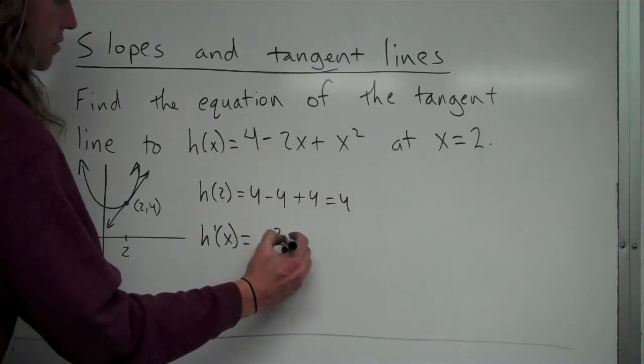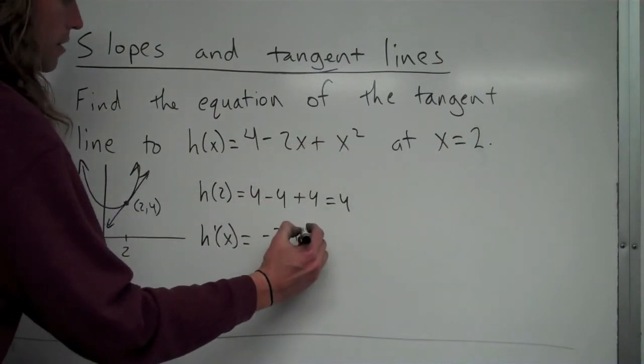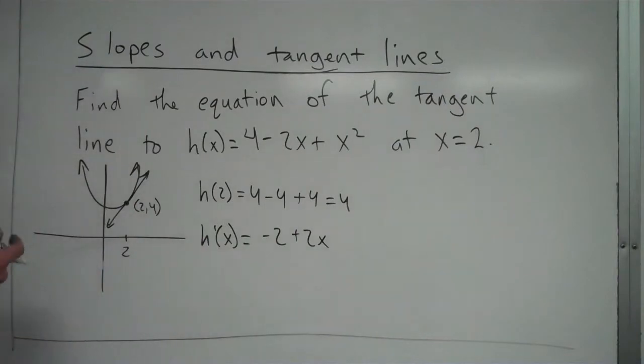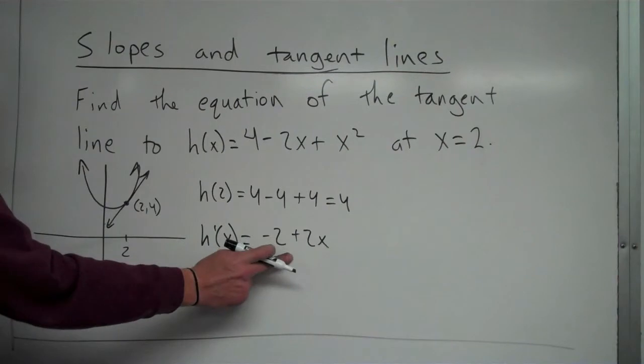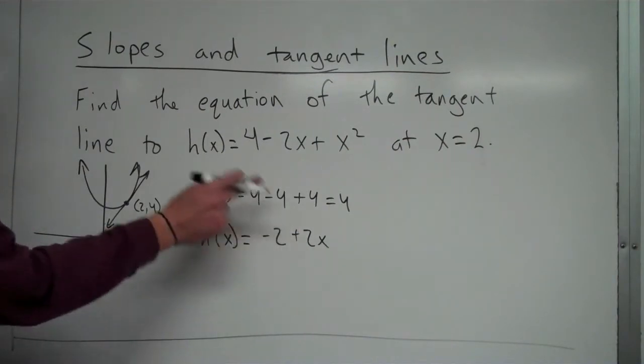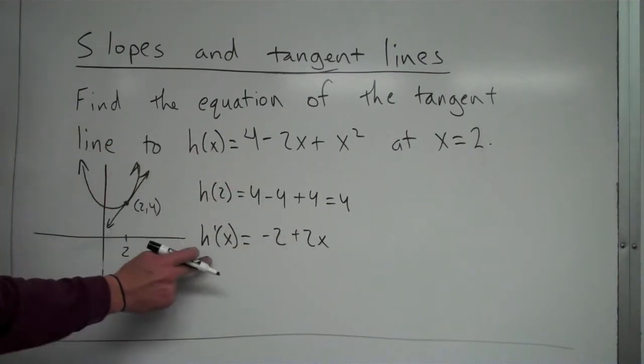The derivative of x² is going to be +2x. I'm using the power rule for this derivative. So here's my derivative of h, which just tells me the slope. It's the general slope of my function h(x) here. So this is h'(x).